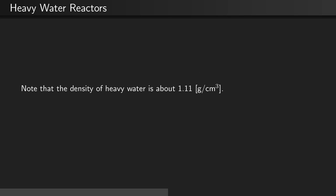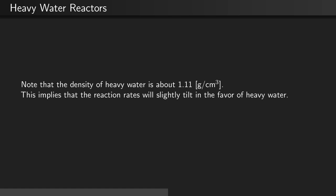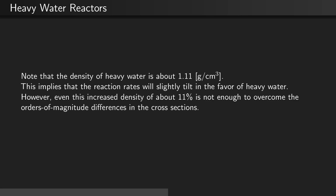Note that the density of heavy water is slightly higher than light water at about 1.11 grams per centimeter cubed. This implies that the reaction rates will be slightly higher for heavy water simply based on the density. However, even this increased density of about 11% is not enough to overcome the orders of magnitude difference in the absorption cross-sections.